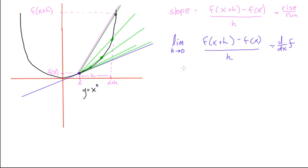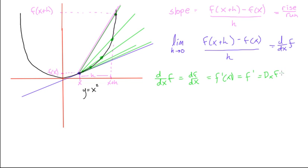There are actually a couple of ways to write the derivative. If we're talking about the function f(x), to represent the derivative we could write d/dx of f, or df/dx. You could also say f prime at x, or just f prime as shorthand. Some textbooks write it as dx over f, or dx at f(x), and so on. There are tons of different ways to write it, but these all mean the same thing — they are the derivative of the function, in this case f(x).